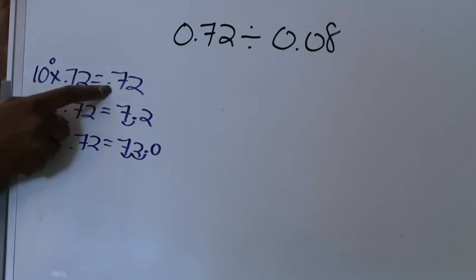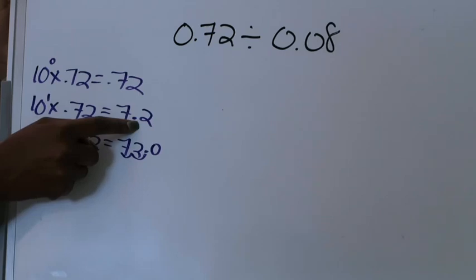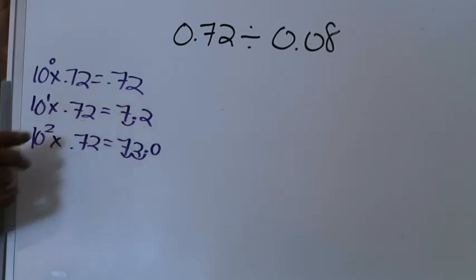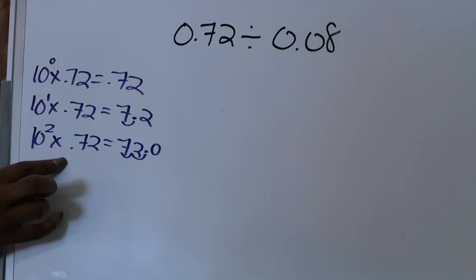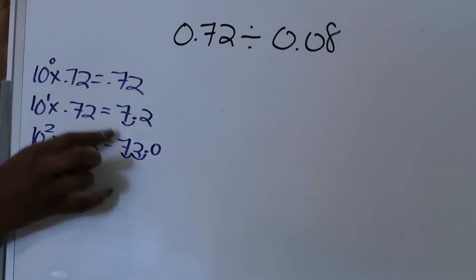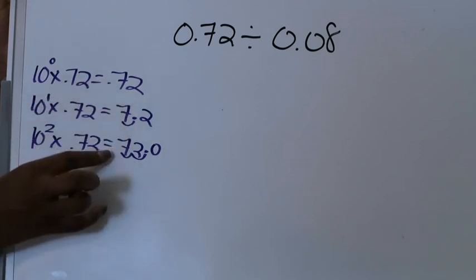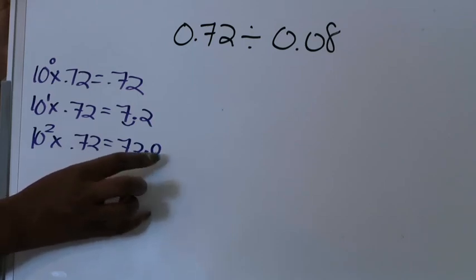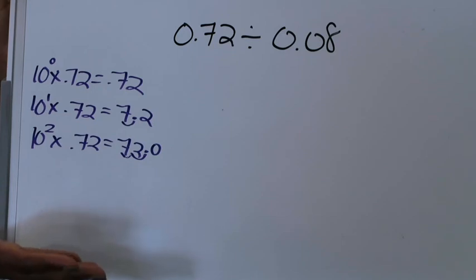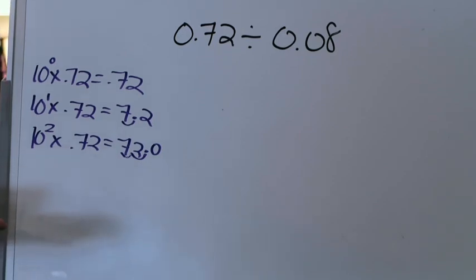Now 72 hundredths is read as 7 and 2 tenths. I'm going to keep going because I want it to be read as 72. My second power of 10 multiplied by 72 hundredths is going to cause my decimal point to move to the right two times, and now my answer is going to be read as 72.0 or 72 wholes, which is exactly what I want.